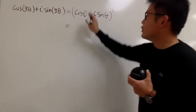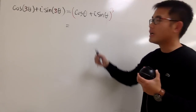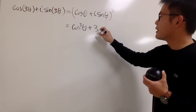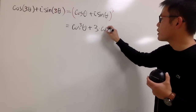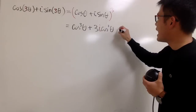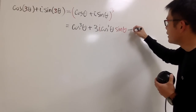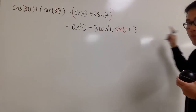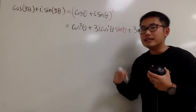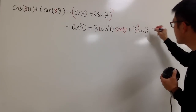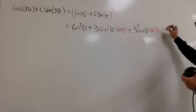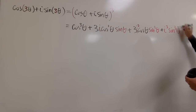Let's work this out. To multiply this out, this is the third power, and the binomial theorem says we take the first term raised to the third power, then add 3 times the first term squared — so cosine squared theta — times the second term to the first power, which is i sine theta. Then we continue: adding 3 times cosine theta to the first power times i squared sine squared theta, and lastly i to the third power times sine to the third power theta.